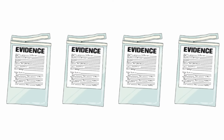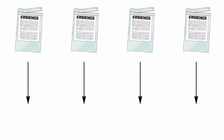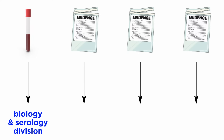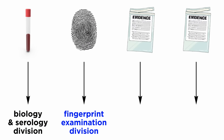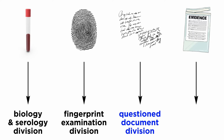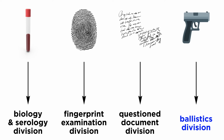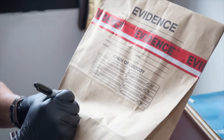The first step is to identify all the evidence according to the labels on their packaging. Then they are sorted and forwarded to their respective divisions in the laboratory. For example, biological evidence is sent to the biology and serology division, fingerprints to the fingerprint examination division, handwriting evidence to the questioned document division, and firearms and gunpowder evidence to the ballistics division. Once evidence reaches their respective divisions, they are opened and labeled a second time, as every division has its own labeling system to avoid confusion.